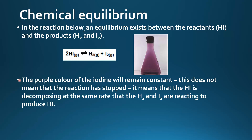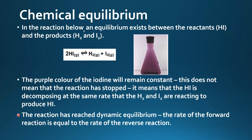The purple color of the iodine will remain constant. This does not mean the reaction has stopped — it means hydrogen iodide is decomposing at the same rate that hydrogen and iodine are reacting to produce hydrogen iodide. The reaction has reached dynamic equilibrium: the rate of the forward reaction is equal to the rate of the reverse reaction.